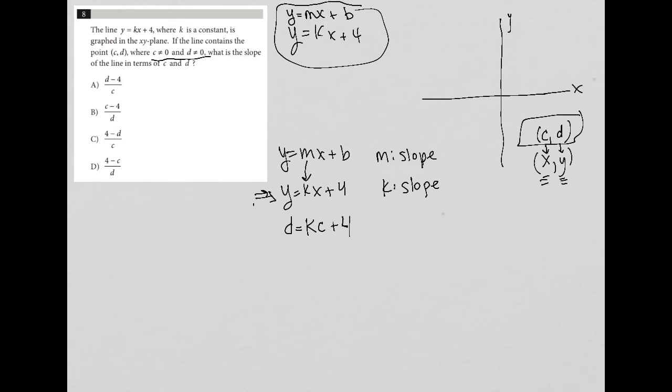Now, why am I able to do that? Well, I'm treating this like I actually know the value of c and d. If I knew what those numbers were, if you knew what the ordered pair was that the line went through, and you were asked to determine the slope, you would just plug in.